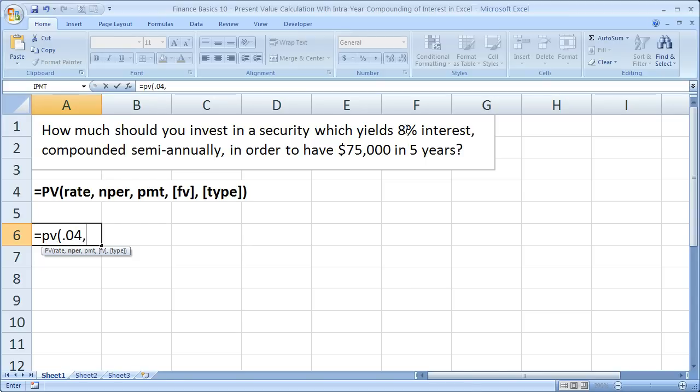Comma. Now we need the number of periods. Well, the number of periods is, if it was standard, it would just be 5 for 5 years. But since a period in this example is 6 months, we need to multiply 5 years by 2. So we have 10 periods.